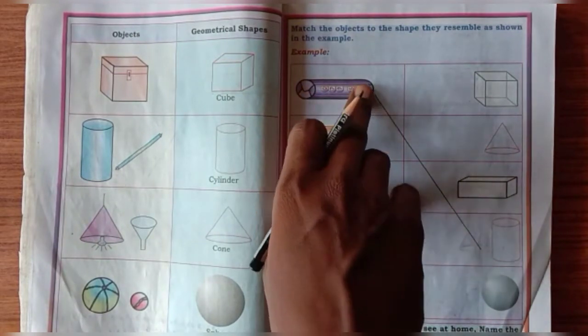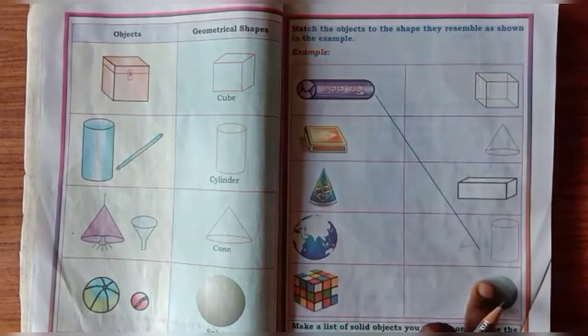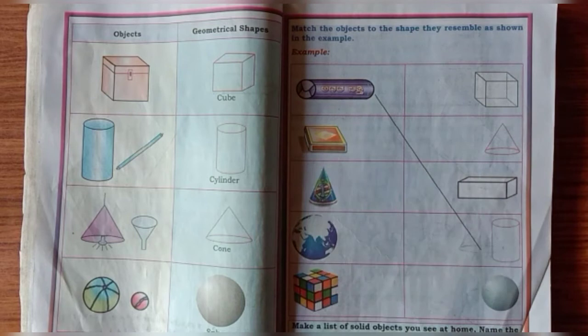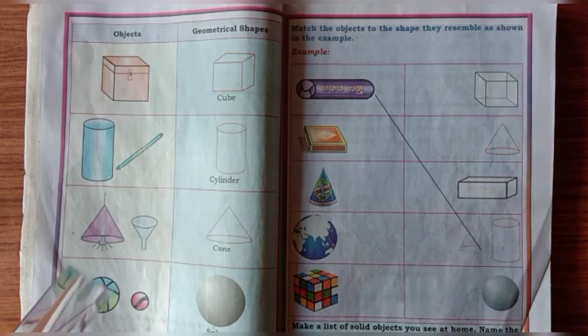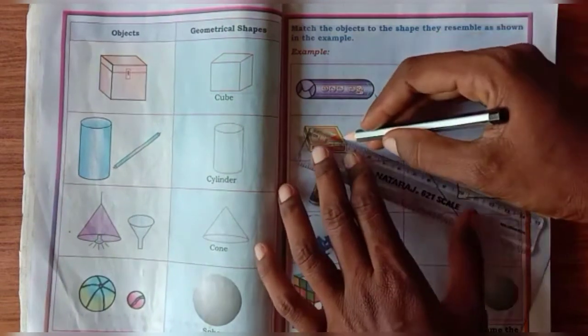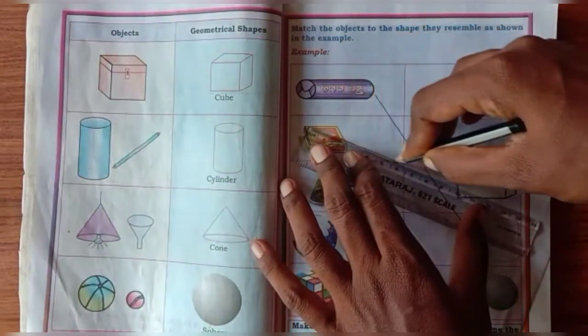First one, this Agarbathi already matched. Next one, this match box with geometrical shape is correctly matched now. Next, globe.